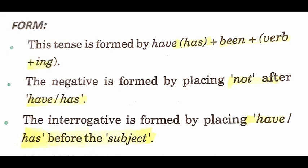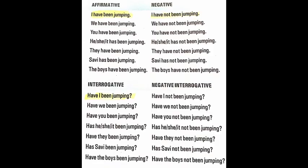For the negative form, place 'not' after 'have' or 'has': 'I have not been jumping,' 'I have not been playing,' 'I have not been studying.' For the interrogative, place 'have/has' before the subject: 'Have I been jumping?' 'Have I been playing?' 'Have I been studying?' This structure is very easy to understand. Please watch this video again for a better understanding.